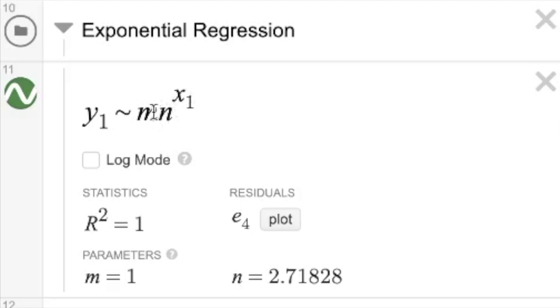So I type in an exponential format using y1 tilde mn to the x1 power. And I could have used any letters that I want there. I could have used a times b to the x1, but a and b were already used up as parameters earlier.